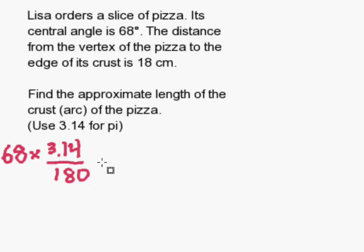I don't really like working with large numbers, so I tried to reduce this. I found the greatest common divisor of 68 and 180 to be 4. So I divided the 68 by 4 and the 180 by 4, and this gives me more manageable numbers. My new problem is 17 times 3.14 divided by 45.